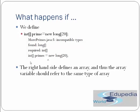What happens if we define it like this: int[] prime = new long[20]? We have taken a reference of an integer array but we are actually defining a long type. It will give you an error of incompatible types — 'found long, required int'. The right-hand side defines the array and the array variable must refer to the same type.